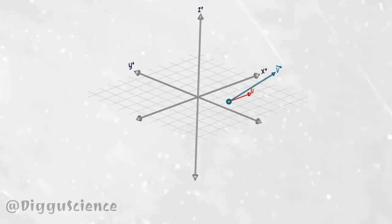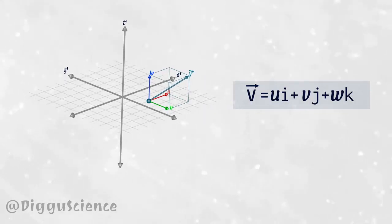Vector components on the x-axis u, vector components on the y-axis v, and vector components on the z-axis w. Mathematically we can write the velocity vector as vector v equals u i hat plus v j hat plus w k hat.